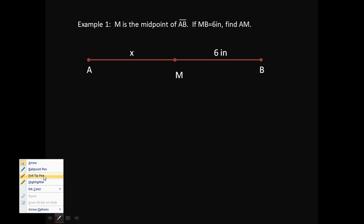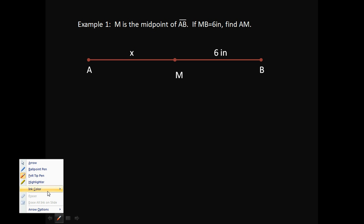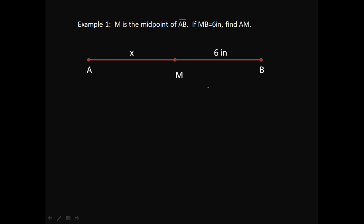So let me go ahead and get my arrow going here, and we'll get the pen, and we'll pick a color like this, sort of bright orange shows up a little. So if it's 6 inches on this side from M to B, then we know that it's going to be also 6 inches over here from A to M. So that means the length of AM is going to be 6 inches. Pretty simple.